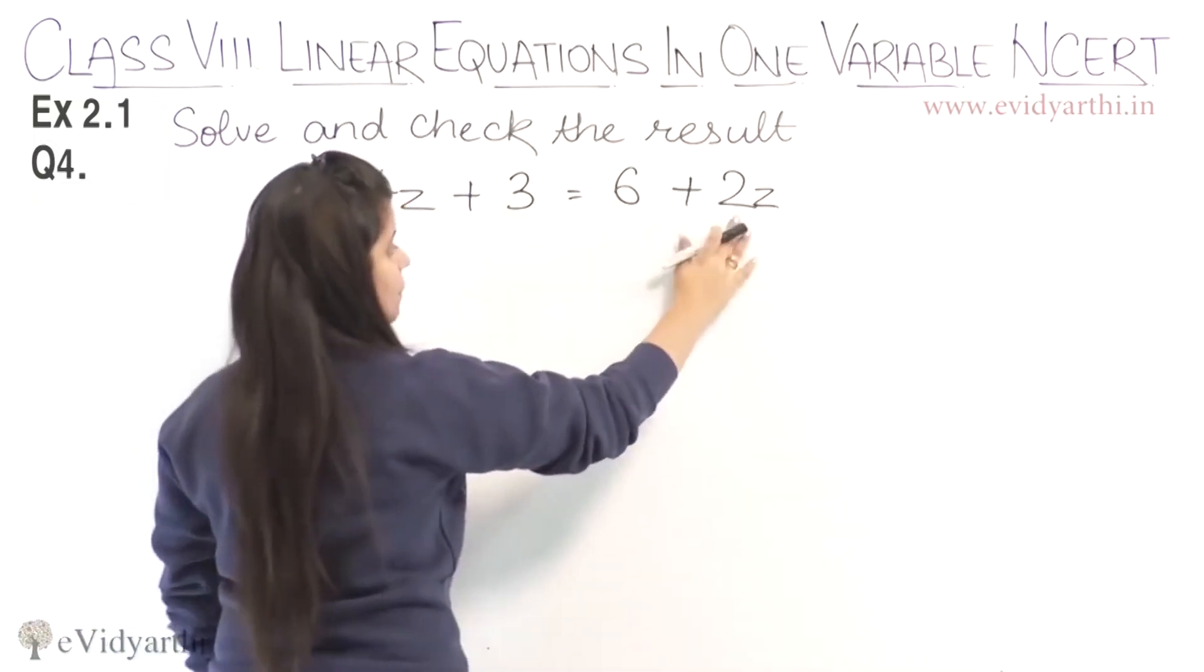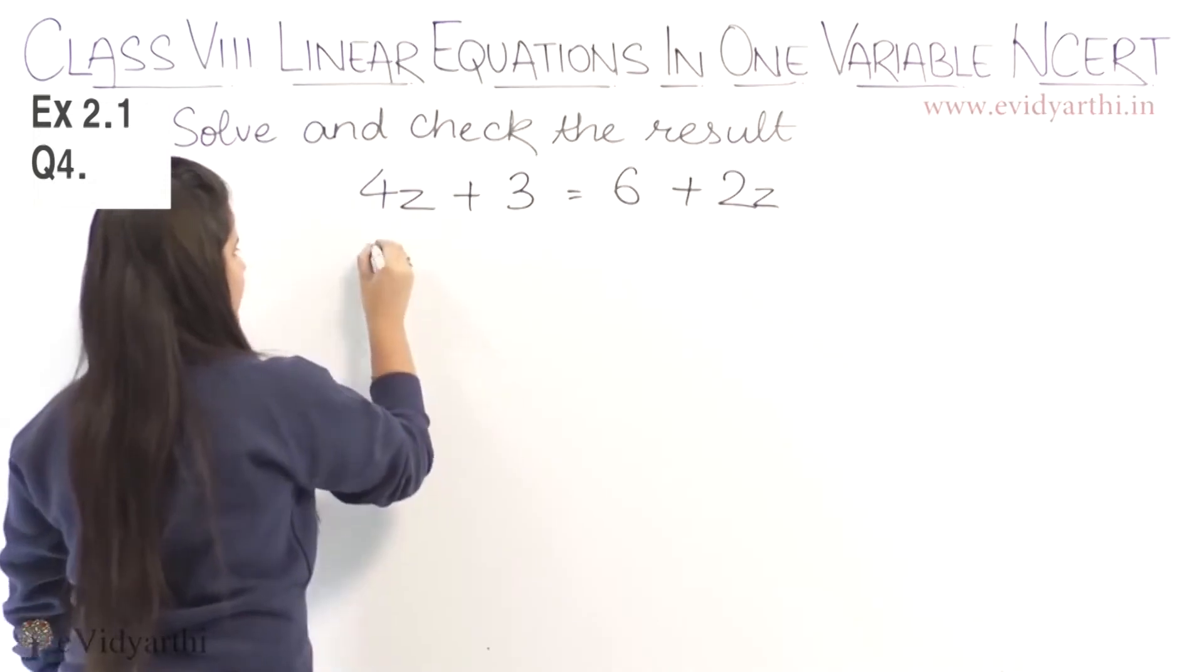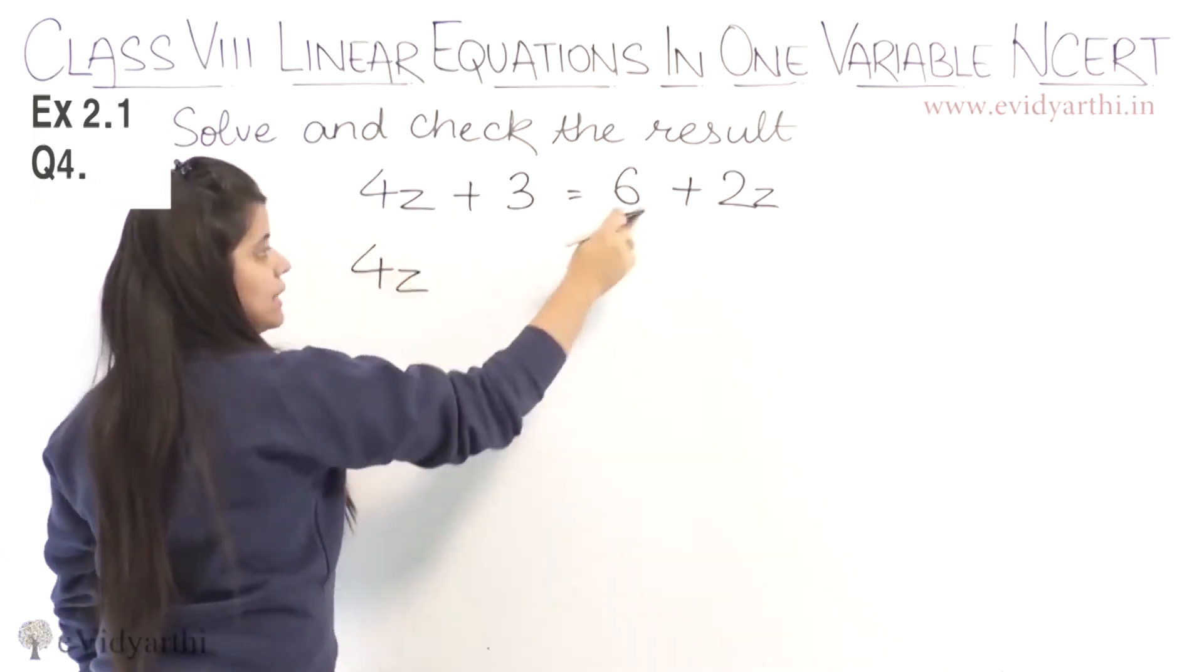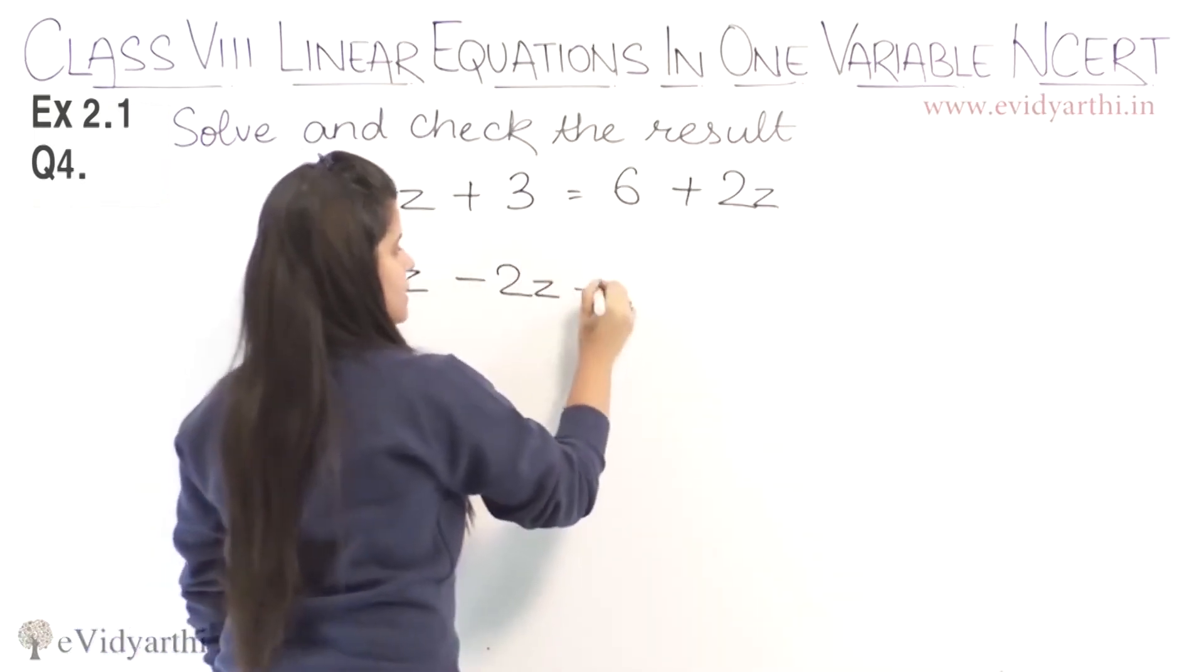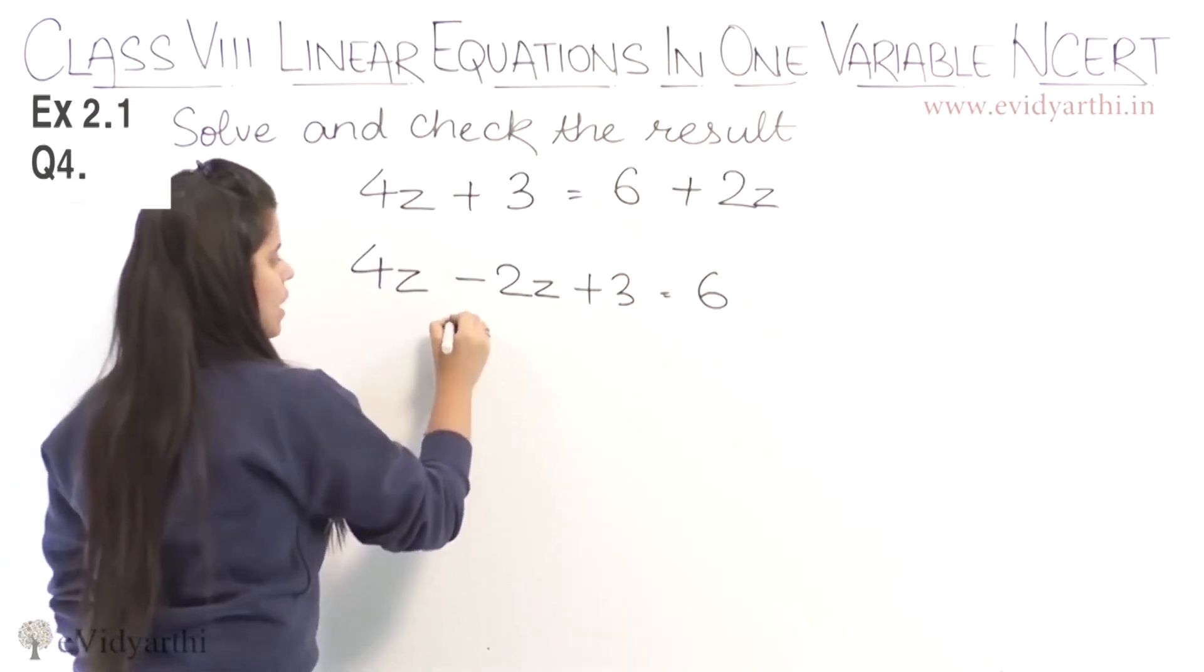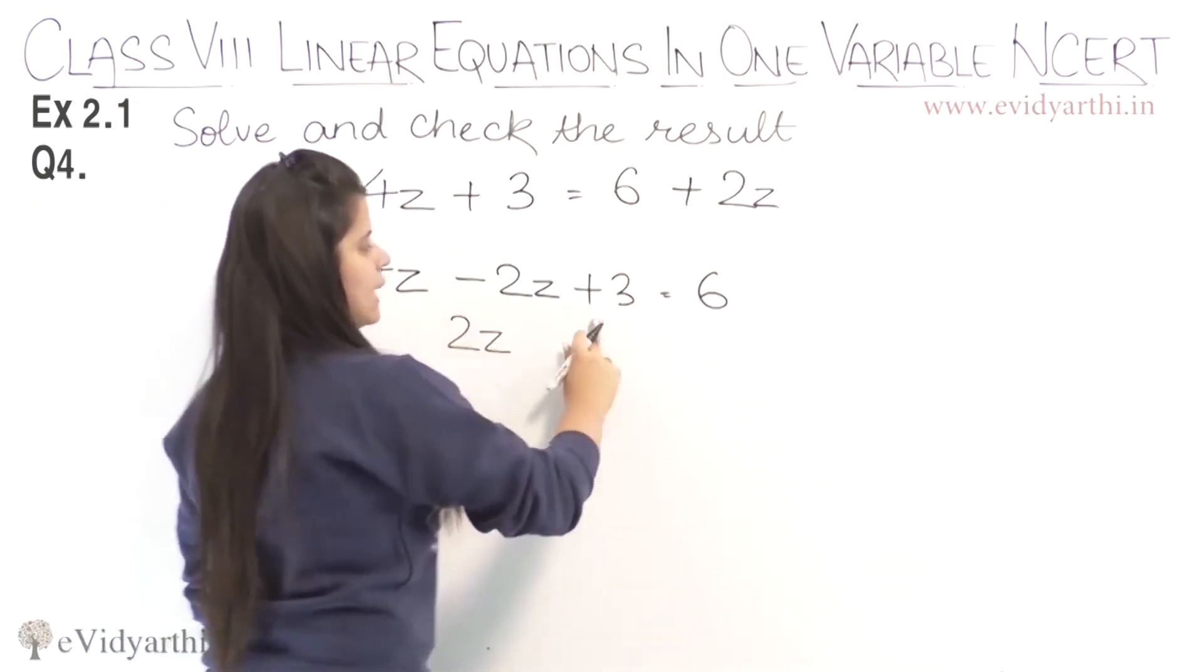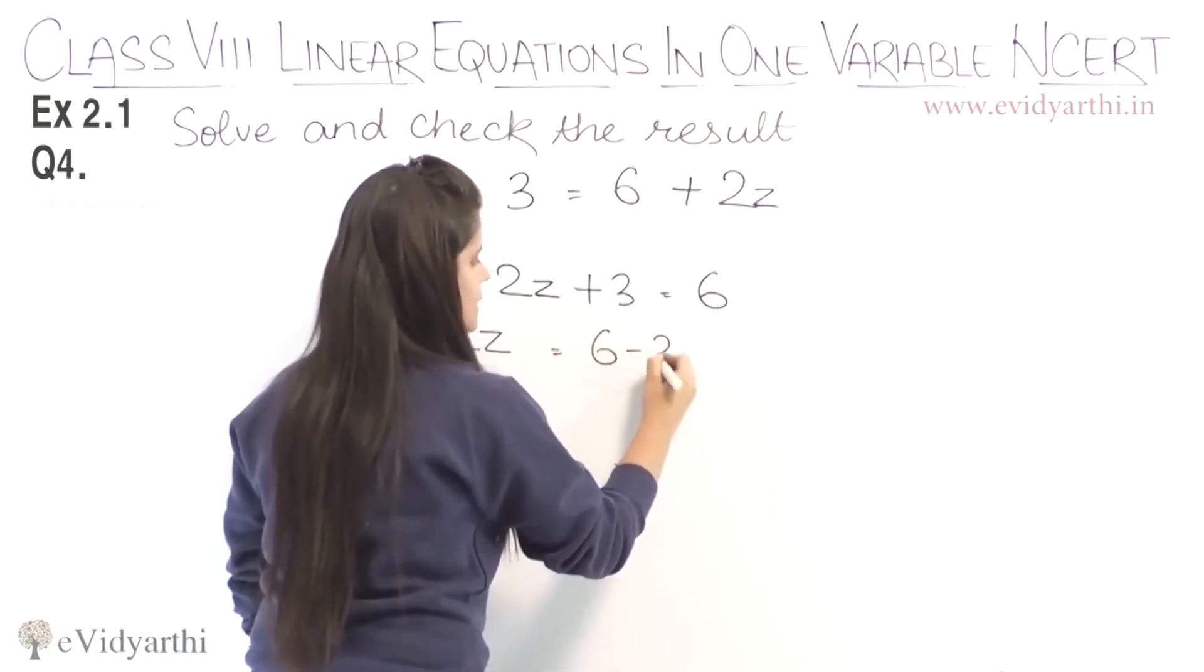So we need to find z. There's z on both sides, so we'll move the terms. We'll get 4z minus 2z plus 3 equals to 6. Now 4 minus 2 is 2z, and moving plus 3 to the other side, we'll get 6 minus 3.